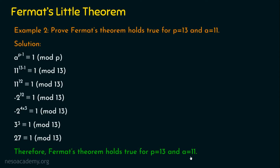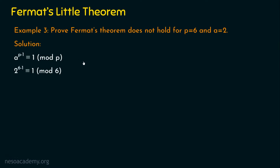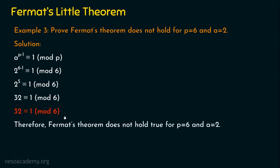Let's see the last example: Example 3. The question is to prove Fermat's Theorem does not hold for p equal to six and a equal to two. Since six is not a prime number, we can immediately conclude the theorem will not hold. Let's verify: substituting, two to the power six minus one, which is two to the power five equals thirty-two, should be congruent to one mod six. But thirty-two divided by six gives remainder two, not one — so this is an invalid congruence. Therefore, Fermat's Theorem does not hold true for p equal to six and a equal to two.